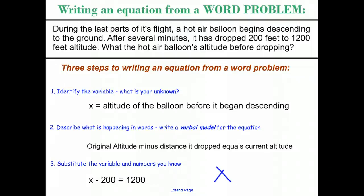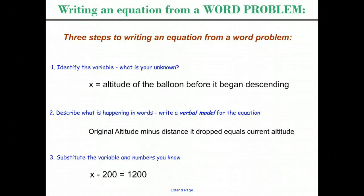And then for mental math, we can see that in this case, x has to equal 1400. So one more time, the three steps of writing an equation for a word problem are identifying the variable, describing what's happening in words, and substituting the variable and numbers that you know. Eventually, we will get to solving. Today, we will only be solving by mental math.